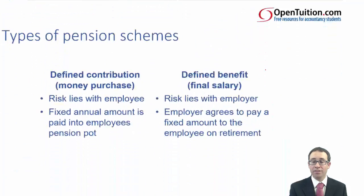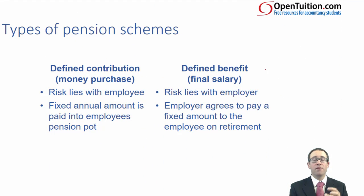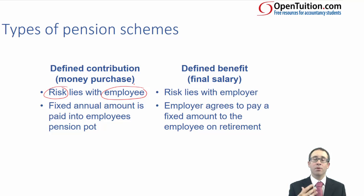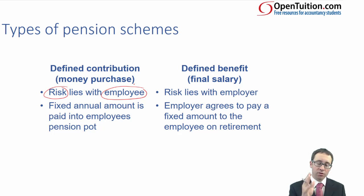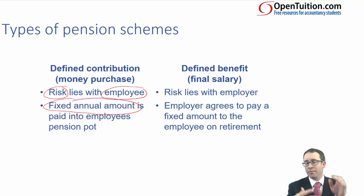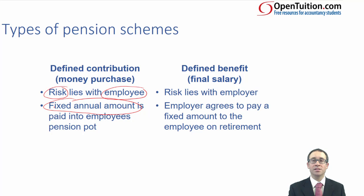To summarise the differences: with defined contribution, the risk is with the employee. The money is paid into your pension scheme, and if it doesn't perform well, you simply have to work a little bit longer. From the company's perspective, that's great — they just pay a fixed amount, a percentage of your monthly or annual salary. It's much easier from a budgeting perspective to operate a defined contribution scheme.